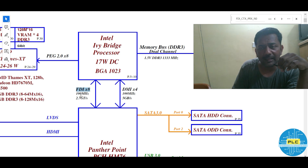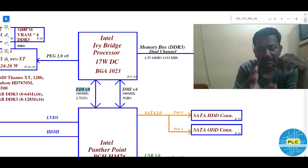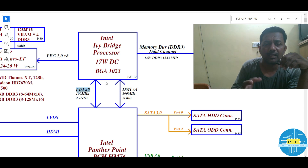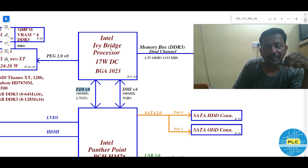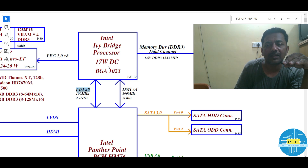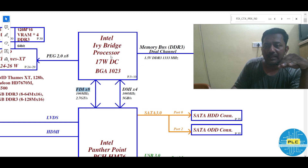Once again, the display interconnect — this bus will connect the display engine which is there in the processor. That connection will happen through the FDI buses, from PCH to processor. The display engine will be in the processor. Through that, it has to recover the data which is already processed — those display images that are buffers. Those buffers will be collected by the PCH from the processor unit through this FDI bus. It connects the display panels which have been processed from the processor's graphics engine.